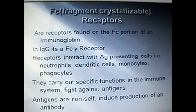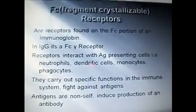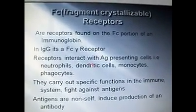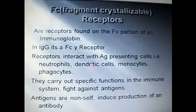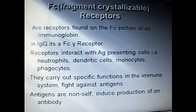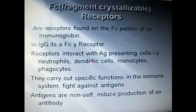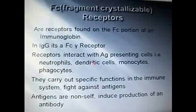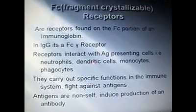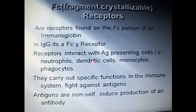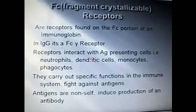Fc receptors are called fragment crystallizable receptors. They are receptors found on the Fc portion of the immunoglobulin. In IgG, we find an Fc gamma receptor. These receptors interact with antigen-presenting cells, which can be neutrophils, dendritic cells, monocytes, and phagocytes. They carry out specific functions in the immune system and fight against antigens.